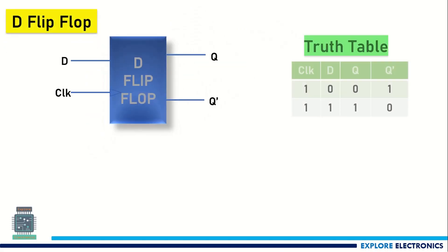As we know, D flip-flop is a device with input D and clock signal. Here I am considering the positive edge of the clock. This is the simple truth table for D flip-flop. For D equal to 0, Q will be 0, and for D equal to 1, Q will be 1. Obviously Q bar is complementary to Q.